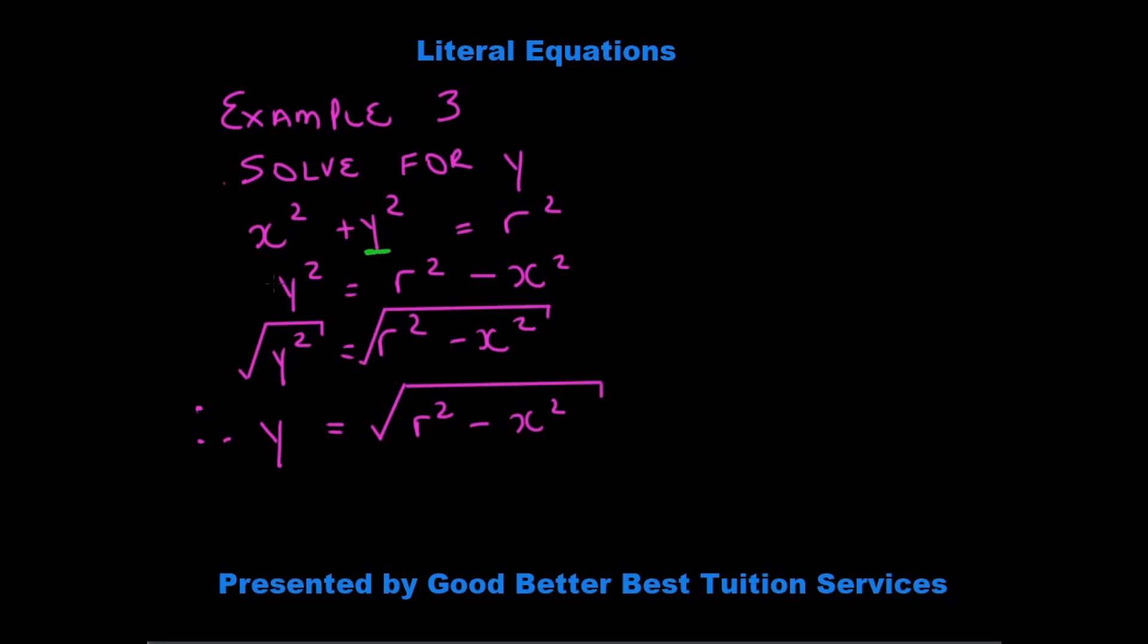So it means that we need to get rid of everything else that's on the left hand side with y. In this case, it's x squared. So it becomes r squared minus x squared. And so we have y squared is equal to r squared minus x squared. And you guys know what do we need to do when there's a square. We need to square root.